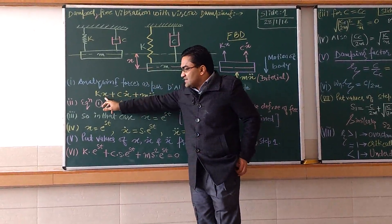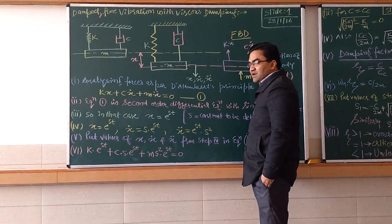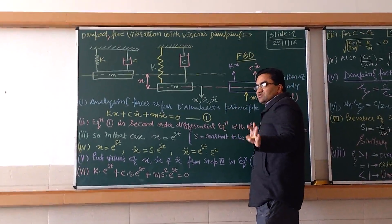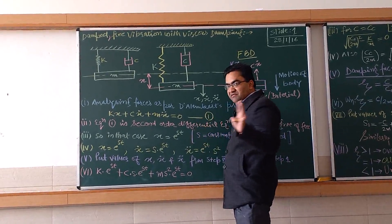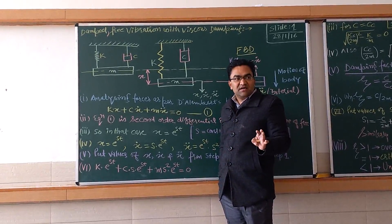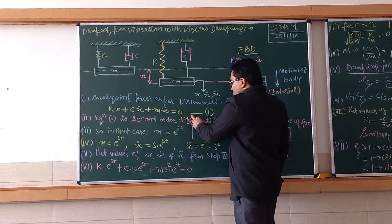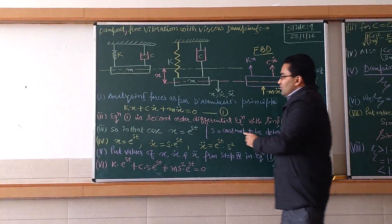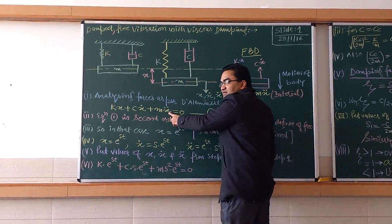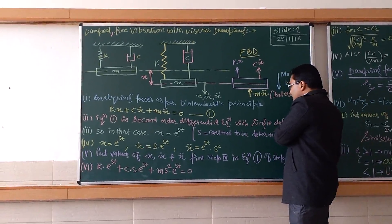Kx acts in the upward direction — the stiffness or resistive force offered by the spring. Cx-dot is the viscous resistive force by the damper. Third is Mx-double-dot — the inertial force by D'Alembert's principle. Setting the sum equal to zero gives us Equation 1: Mx-double-dot + Cx-dot + Kx = 0. This is a second-order differential equation with a single degree of freedom.